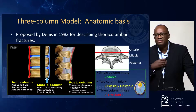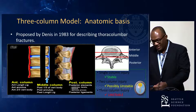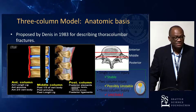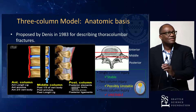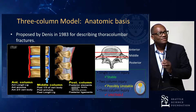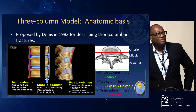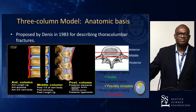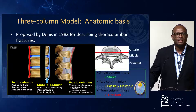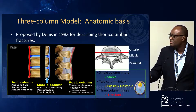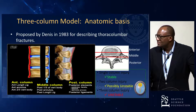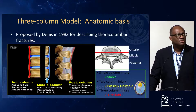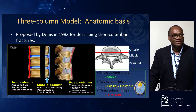The initial model that came out was the three-column model. Everybody knows the three-column model — taught these days in med school: anterior column, middle column, posterior column. That was the initial anatomic basis of fracture injury. Typically, anterior column fractures would be stable; middle column, you start going on shaky ground, possibly unstable; and if you have a three-column injury, it's unstable.